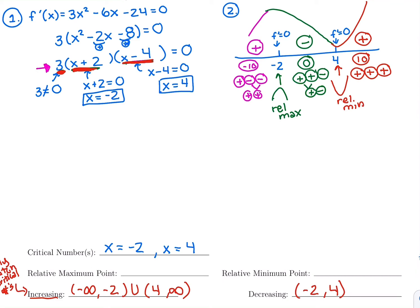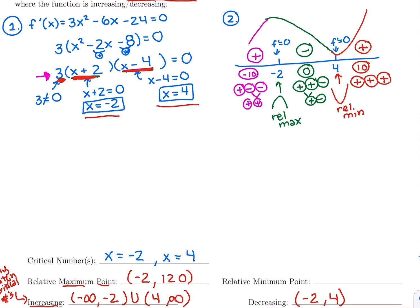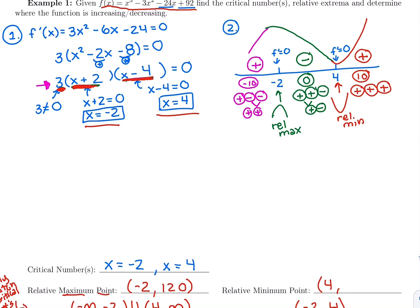Relative max and min also only occur at critical numbers — at negative 2 and 4. For the relative max at x equals negative 2, we need a point, so we plug negative 2 into the original function — not the derivative, which would just give 0. Plugging into the original function gives a y value of 120. For the relative min at x equals 4, plugging into the original function: 4 cubed minus 3 times 4 squared minus 24 times 4 plus 92 gives a y value of 12.